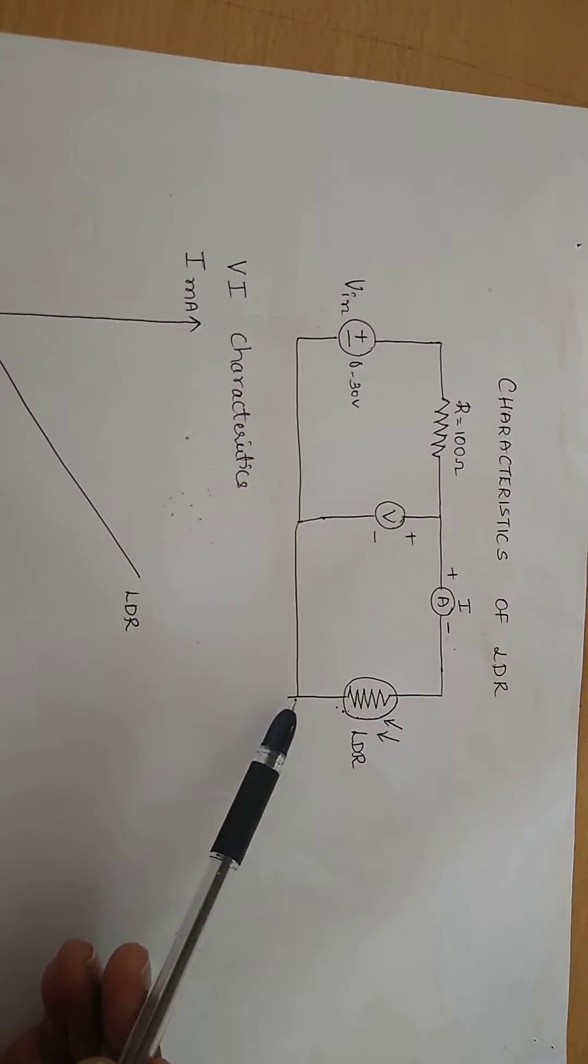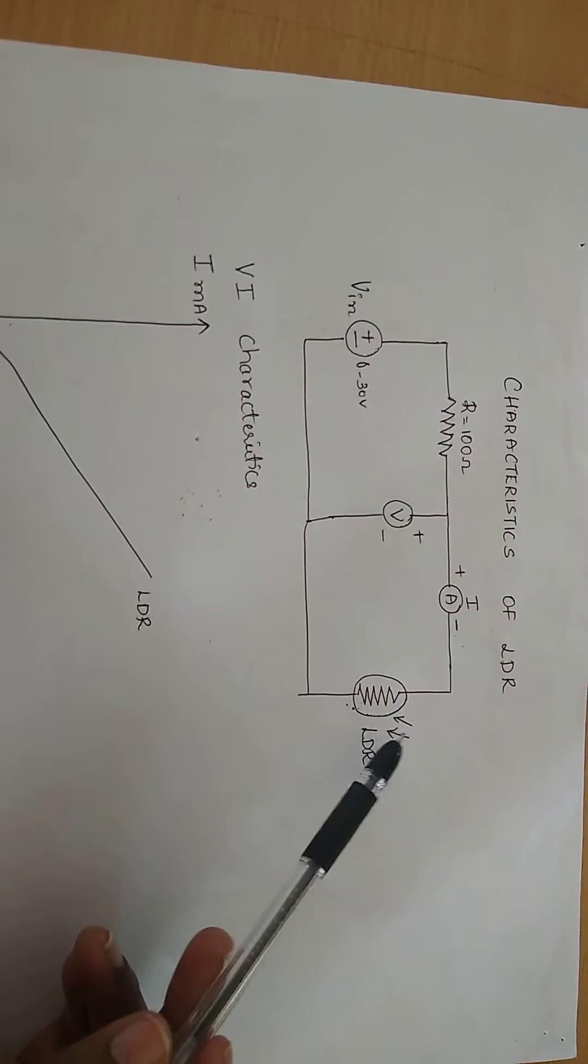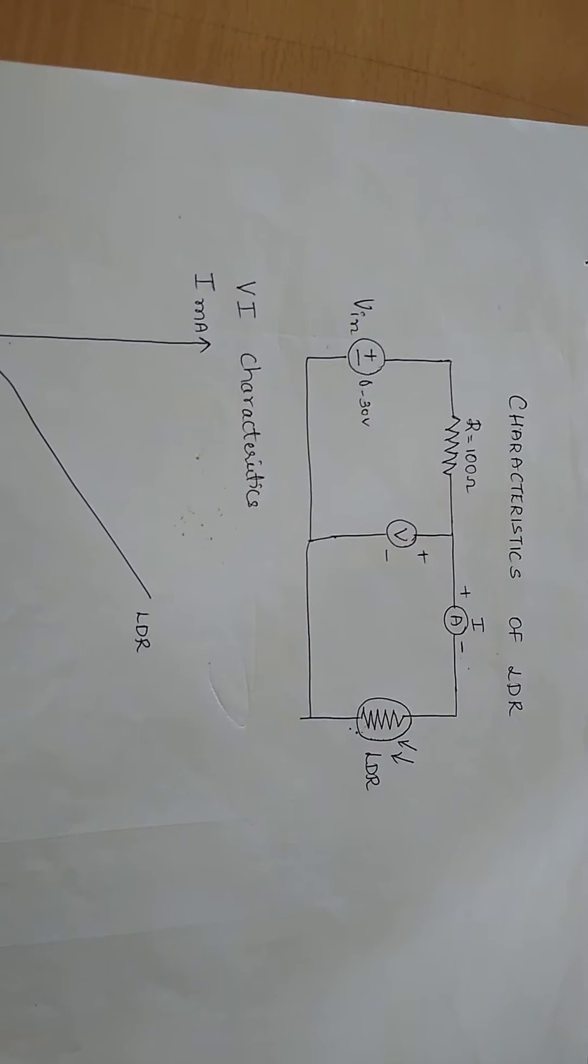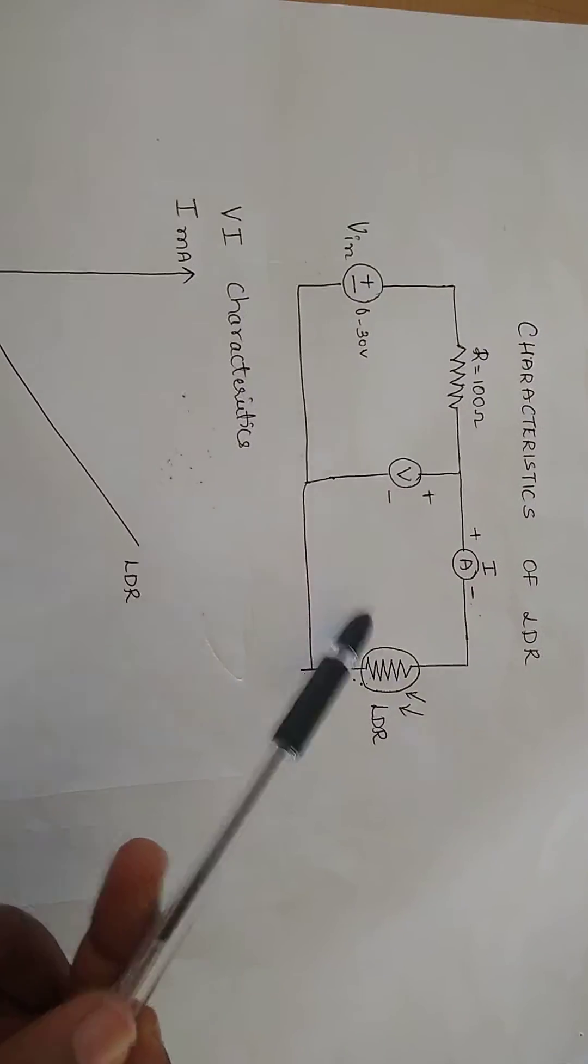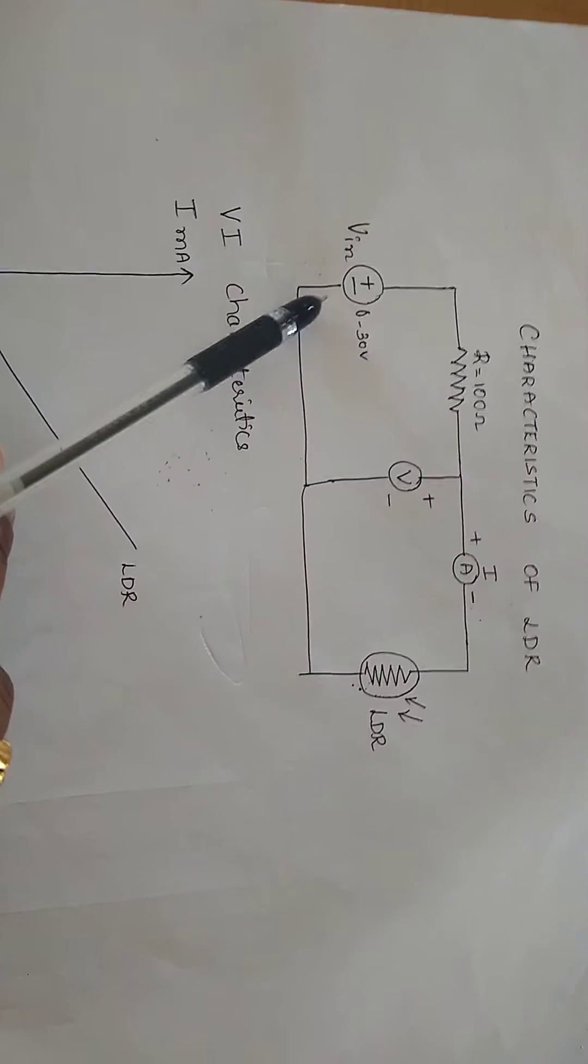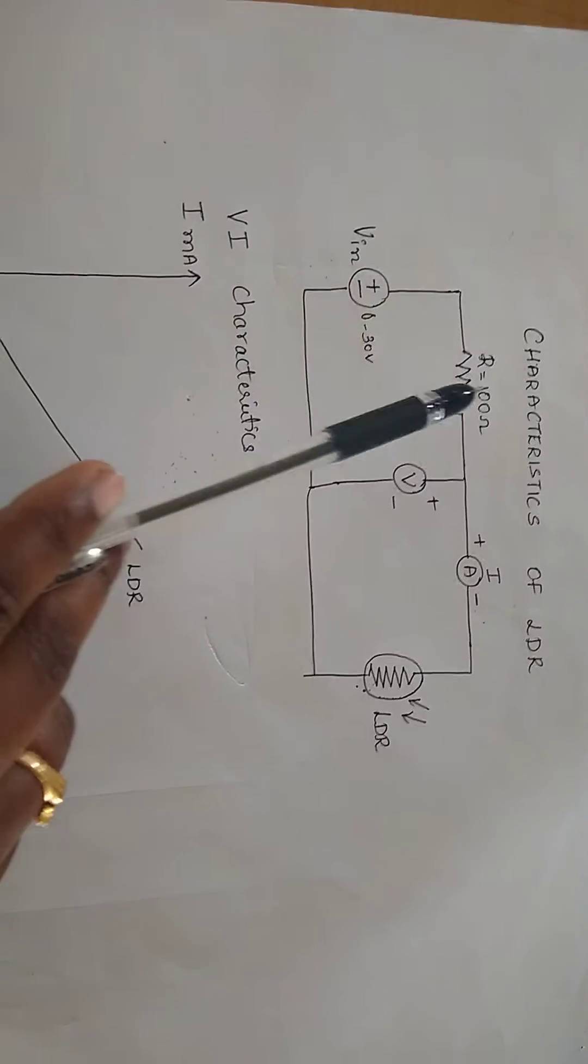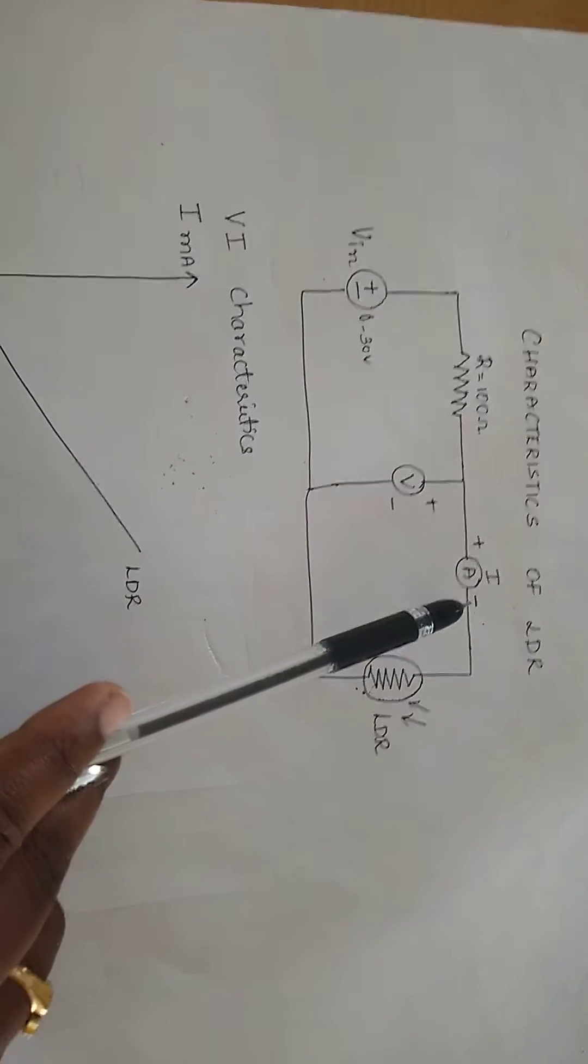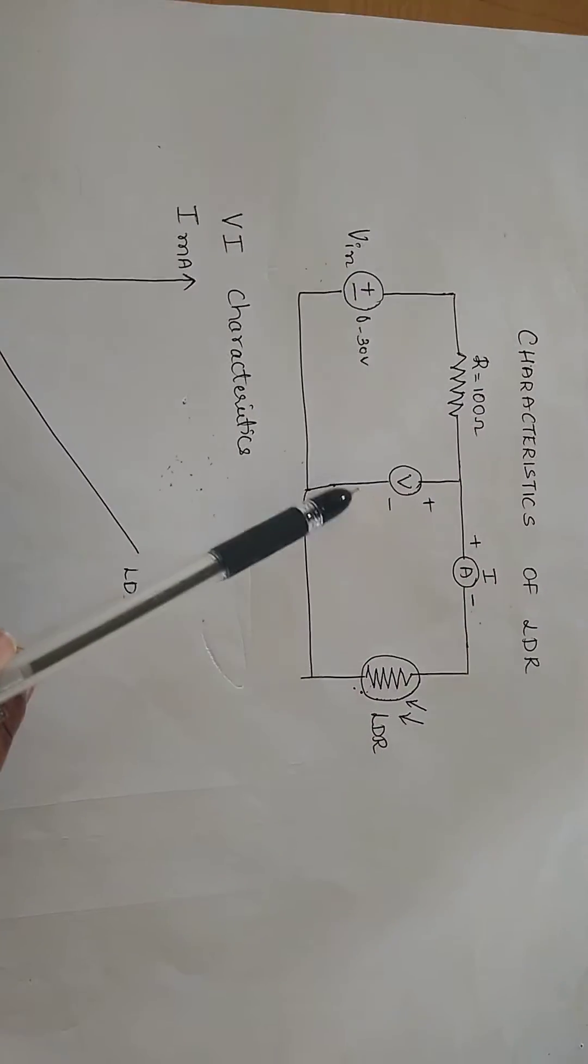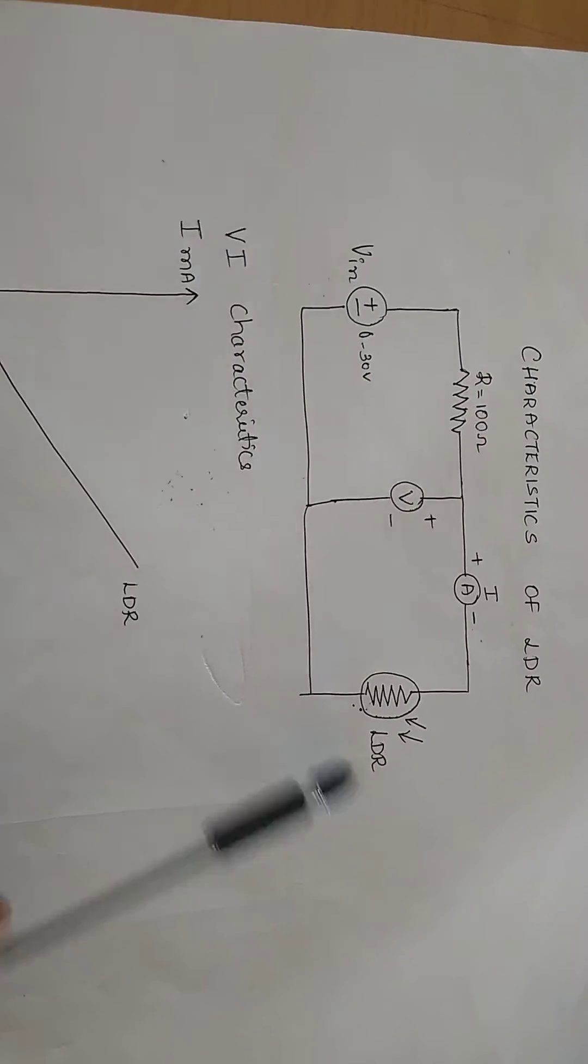This is an LDR symbol and the two arrows indicate the light falling on it. This is a circuit diagram for characteristics of LDR. Input power supply providing from 0 to 30 volts, resistance of 100 ohms is connected, voltmeter is connected and ammeter is connected to note down the values of VI characteristics of an LDR.